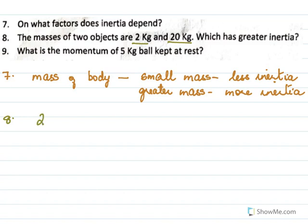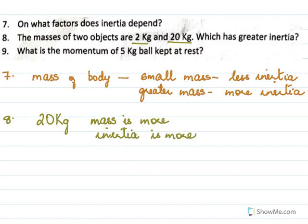The 20 kg body has more mass, hence inertia is more. The ninth question: what is the momentum of a 5 kg ball kept at rest? We know momentum is mass into velocity. Here mass is 5, but it is at rest, so velocity is 0. Therefore momentum is 0 kg meter per second. Every object at rest will have zero momentum.